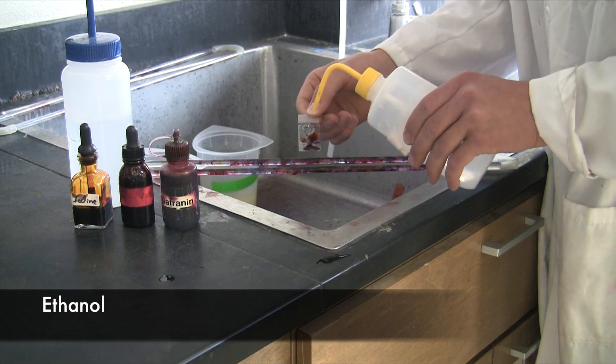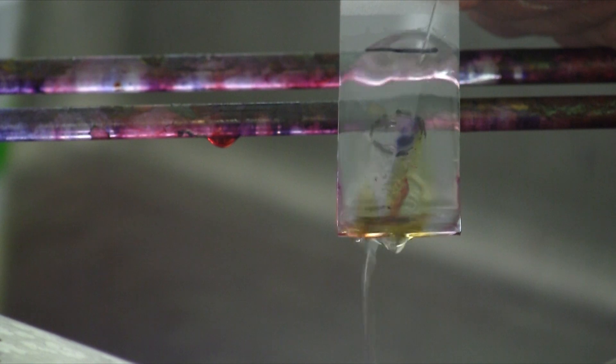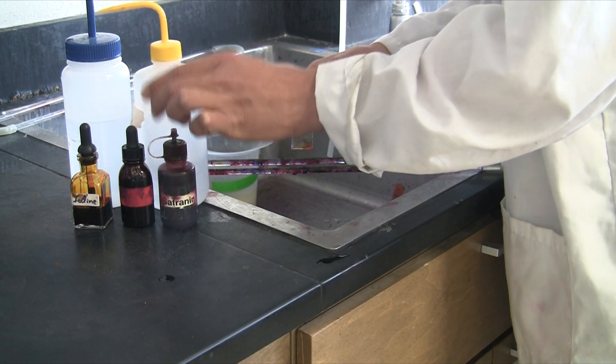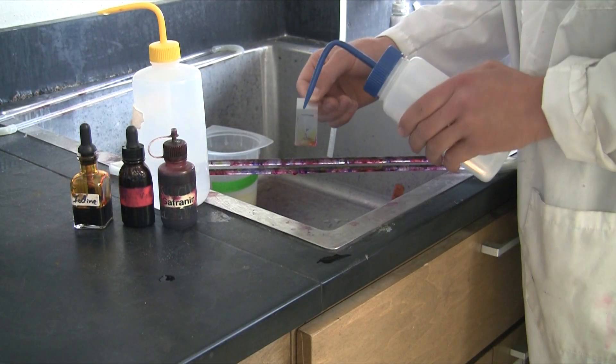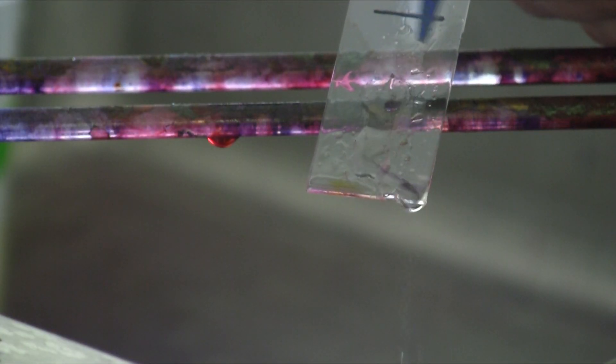This can then be rinsed in the most artsy step of all of the Gram stain, the ethanol step. Rinse just until the runoff is no longer colored and then immediately switch to water. This takes a while to get used to. It's a tricky step.